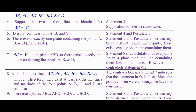Therefore there are at least six distinct lines, and no three of the four points A, B, C, and D are collinear. That's not saying there's no set of three collinear points — just that any three of those particular four points are not collinear.